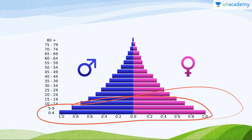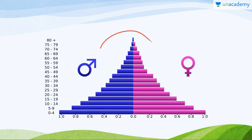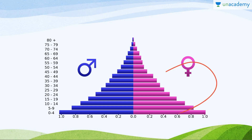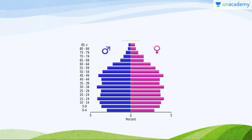In an expanding population, the number of individuals in the pre-reproductive age group is more than in the reproductive age group, which in turn is more than in the post-reproductive age group. After some years, the pre-reproductive group will move to reproductive, so the number of individuals in the reproductive age group will increase, the birth rate will increase, and such a population will keep expanding.